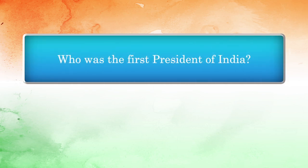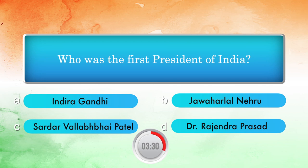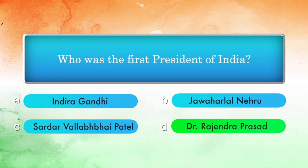Who was the first president of India? Options: Indira Gandhi, Jawaharlal Nehru, Sardar Vallabhbhai Patel, Dr. Rajendra Prasad. Answer: Dr. Rajendra Prasad.